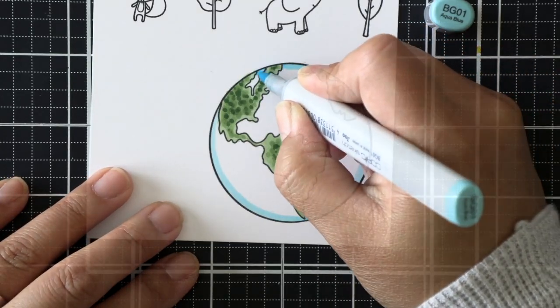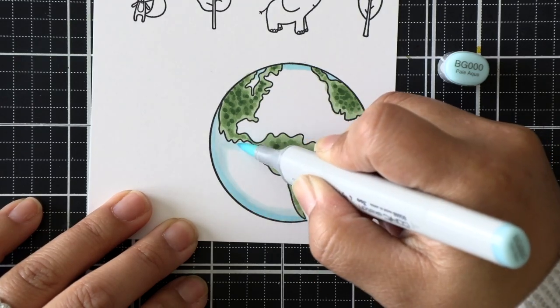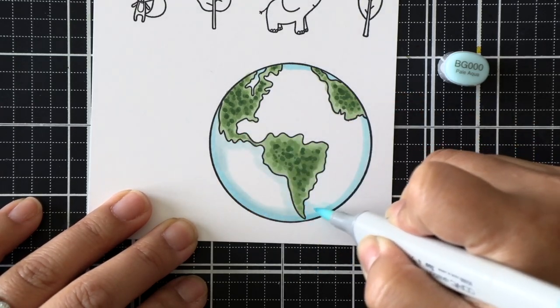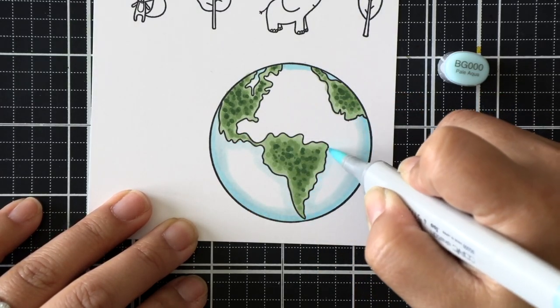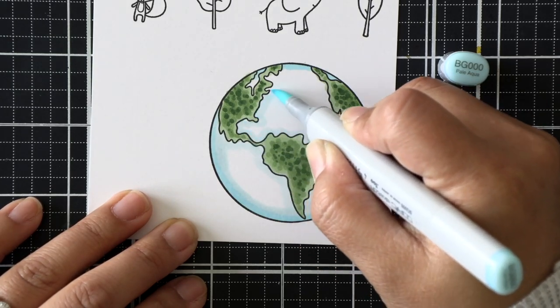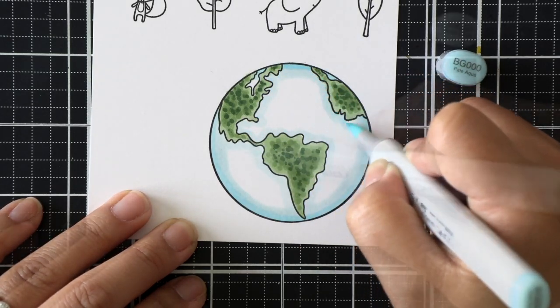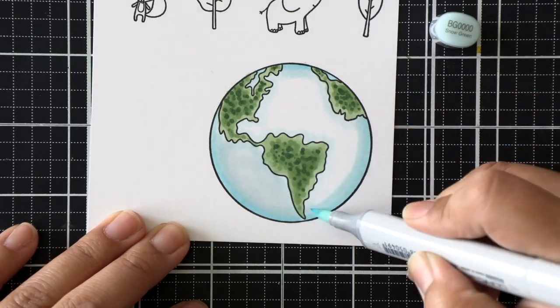For the water, I'm just using a very light blue. With the darkest shade, I'm going to outline just the globe, and then I'll go in with a medium shade and outline around the globe as well as all the continents. Then I'll flood the entire image with the lightest shade of blue that I've chosen.